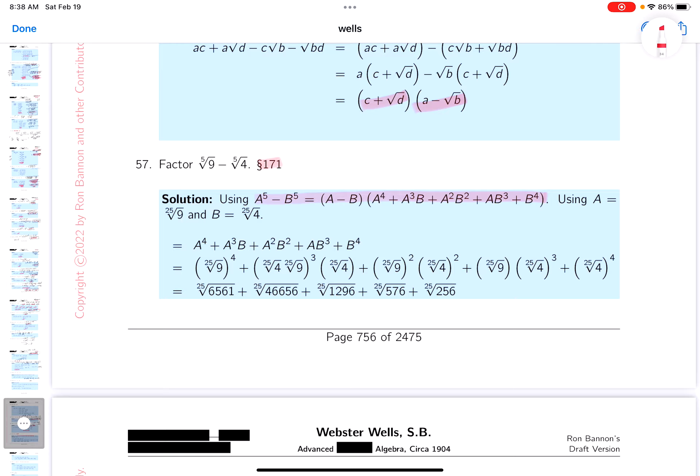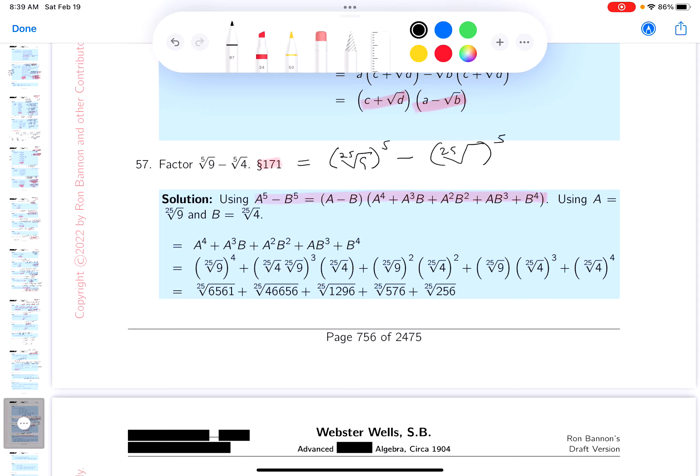The first thing I would want to do is just write it so it looks like that, because he gave me that hint. So let's write that down. I want to write it as a difference of fifth powers, and what's it going to be? The 25th root of 9, the 25th root of 4.